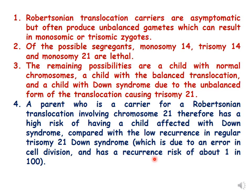Robertsonian translocation carriers are asymptomatic but often produce unbalanced gametes, which can result in monosomic or trisomic zygotes. Of the possible segregants, monosomy 14, trisomy 14, and monosomy 21 are lethal. Monosomics can result from one chromosome fewer in the 14th chromosome, or they can be trisomic because of one extra chromosome number 14.